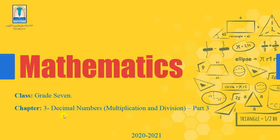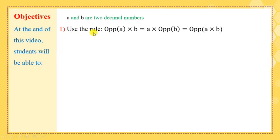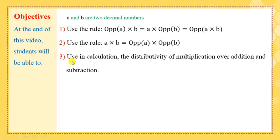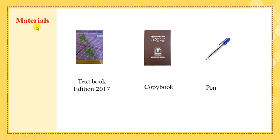Peace be upon you. We're going to take the last part of Chapter 3, Decimal Numbers: Multiplication and Division, which is Part 3 for Grade 7. At the end of this video, students will be able to use the rule: opposite of (a × b) = a × opposite of b = opposite of a × b, and the rule a × b = opposite of a × opposite of b, where a and b are two decimal numbers.